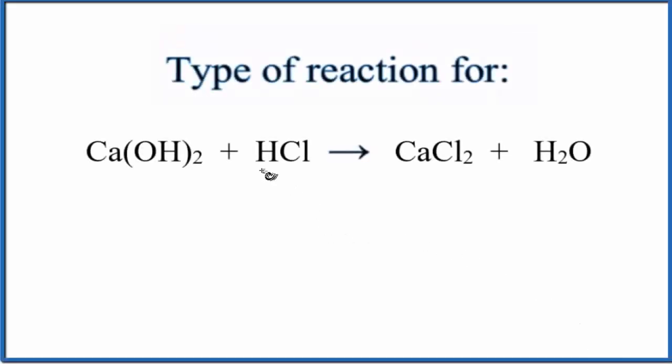In this video, we're going to take a look at the type of reaction for Ca(OH)₂ plus HCl. This is calcium hydroxide plus hydrochloric acid.